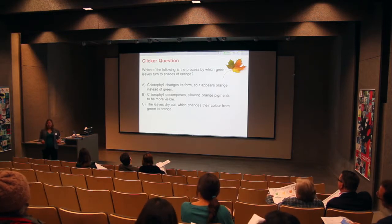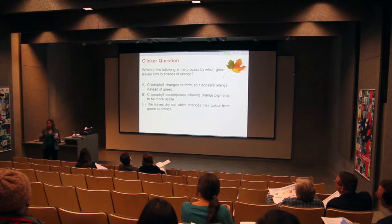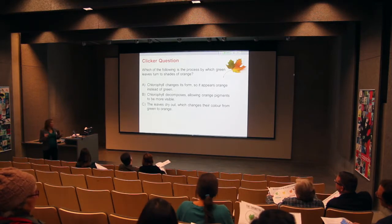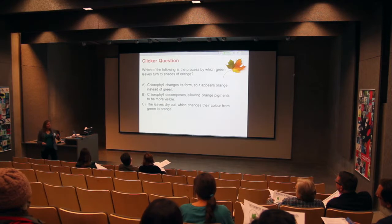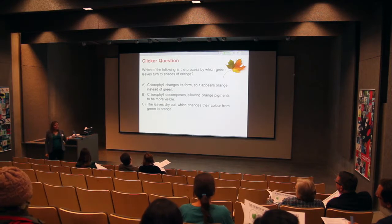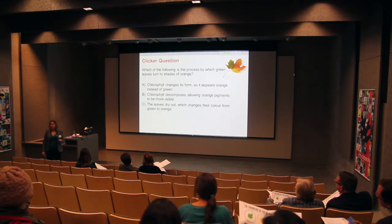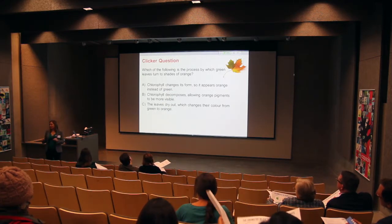The leaves do dry out, and so it's a common thing to think that moisture content is really related to the color. Eventually they fall off the trees. But that's not a very specific answer getting into what the pigments are doing and which pigments are responsible for the color in terms of the chemicals.